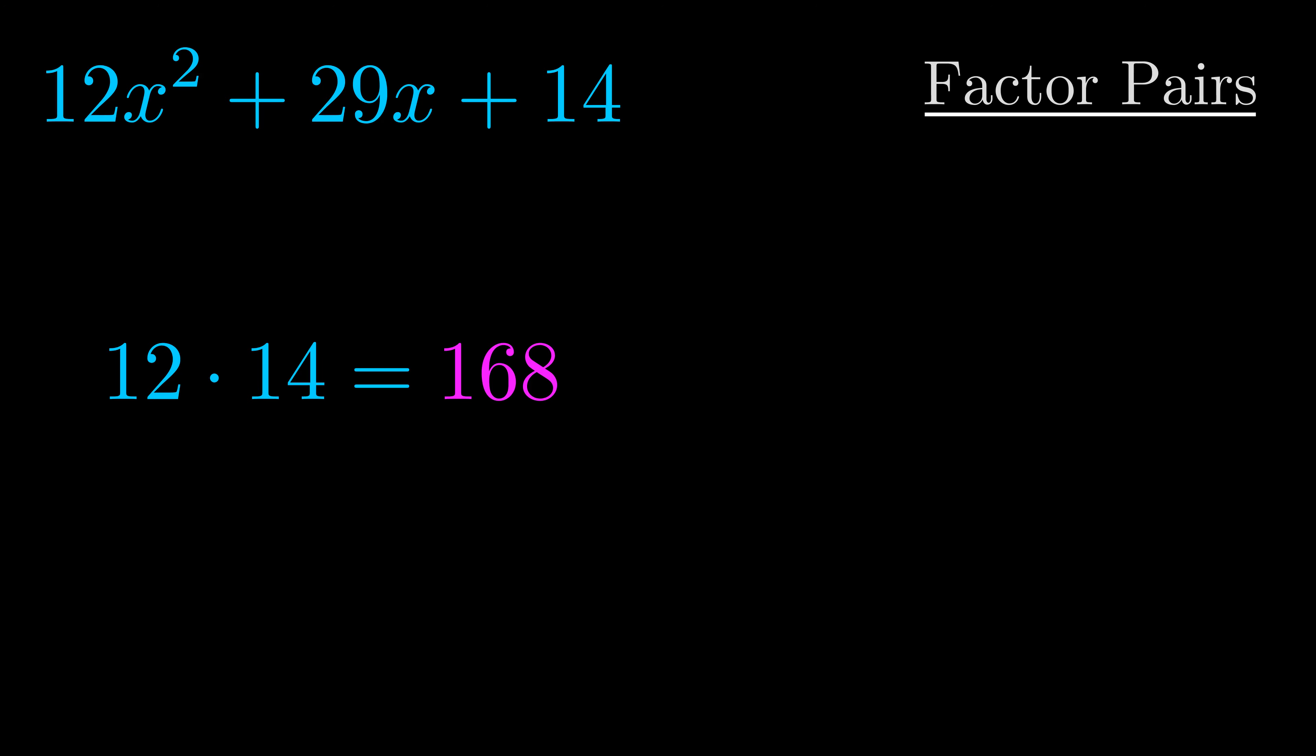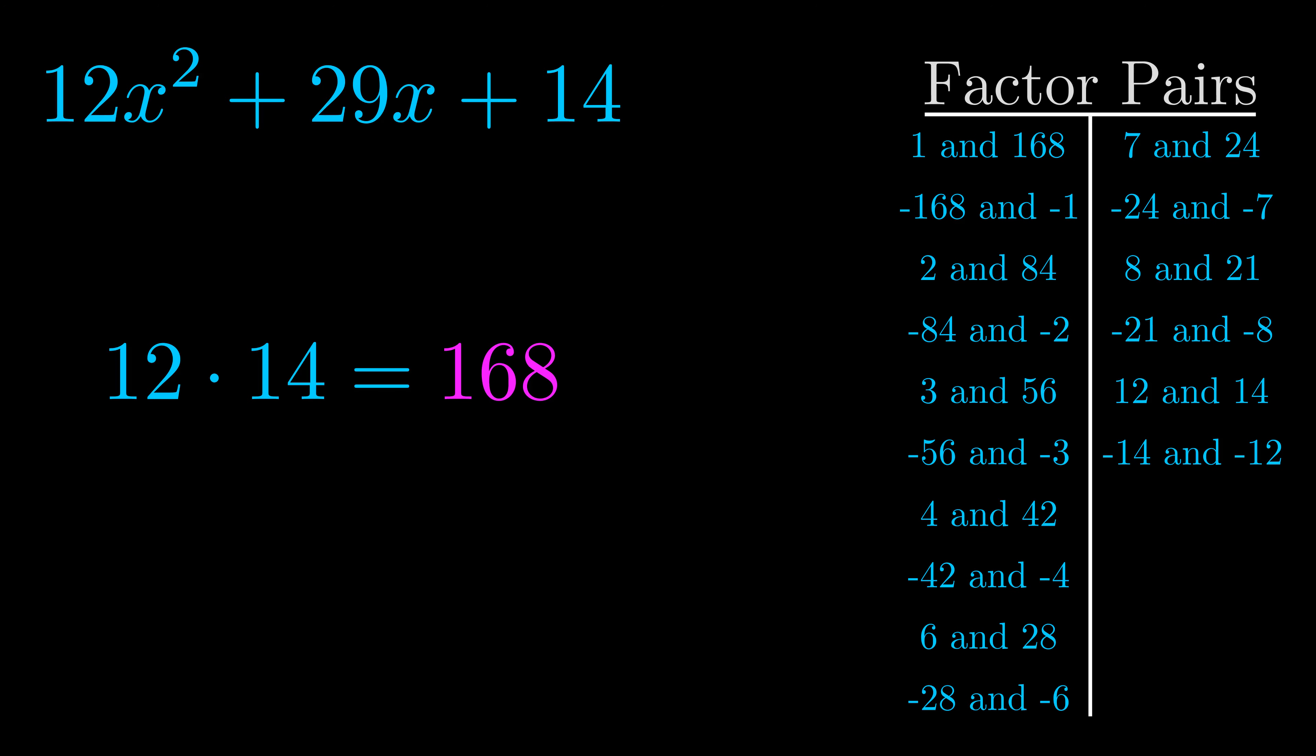Okay here's what I came up with. Now once you have these factor pairs the goal is to find which of these pairs adds to the b value.